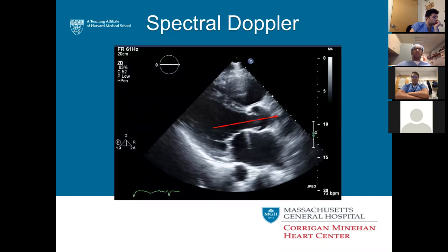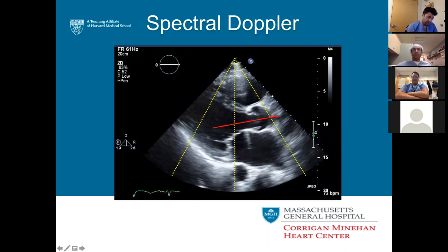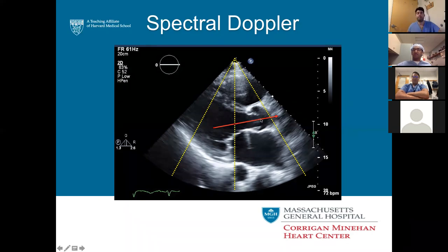For example, in your parasternal view the aortic valve runs across the image. The echo beam always starts from the top of the screen. When you shoot down you're not in line with blood flow, so you can't use the velocity or pressure numbers to assess how bad the valve is. You can see color and if it's turbulent you can say there's likely a problem, but you should never use these numbers to say the pressure gradient is 50.